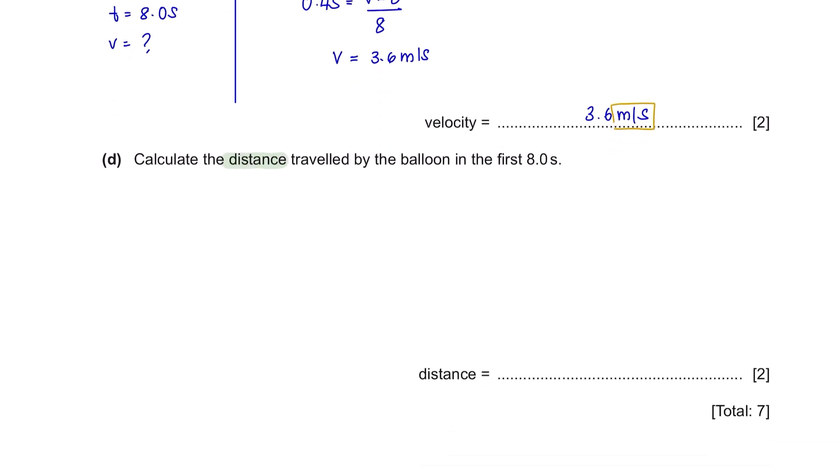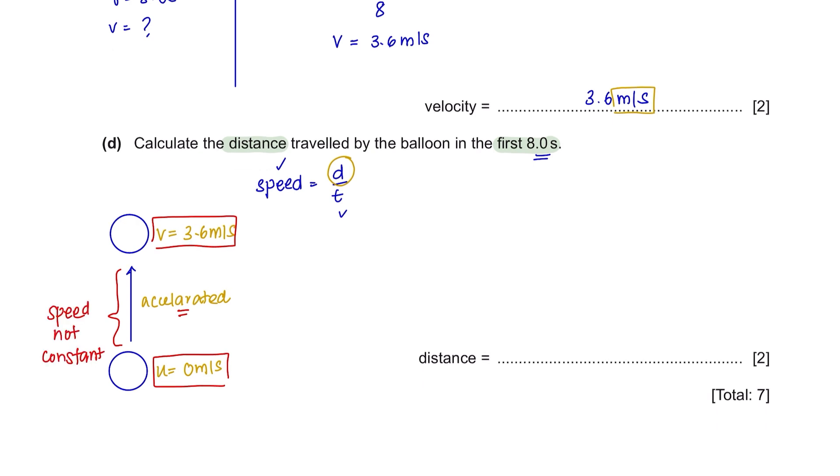Question D. Calculate the distance travelled by the balloon in the first 8 seconds. We know that speed equals distance over time. Meaning that using the value of speed given and the time given here, we can obtain distance. In this case, your balloon accelerated from an initial speed of 0 meters per second to 3.6 meters per second. This means that throughout the motion of the balloon, the speed was not constant. So we can't just use the value of speed here equals to 3.6 meters per second. You have to take the average speed here which is final speed minus initial speed divided by 2 and you will get 1.8 meters per second. Then you will get a distance of 14.4 meters which converted to 2 significant figures will give you 14 meters.